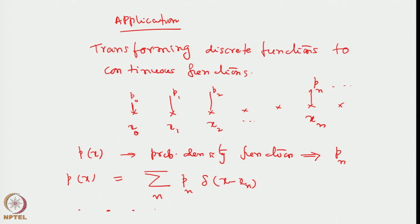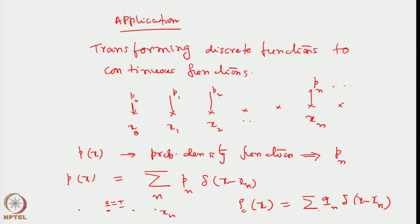Another practical application of a similar concept is if I have charges located at various points in space, and each of them has let us say unit charge Q — Q can be plus 1 or minus 1. I assign a value Qi to it which can take up values plus or minus 1. Then again I can write a continuous charge density function in the form: sum over n of Qn delta(x minus xn). Qn depending on the local charge can take up either plus 1 or minus 1, which is very useful in several problems.